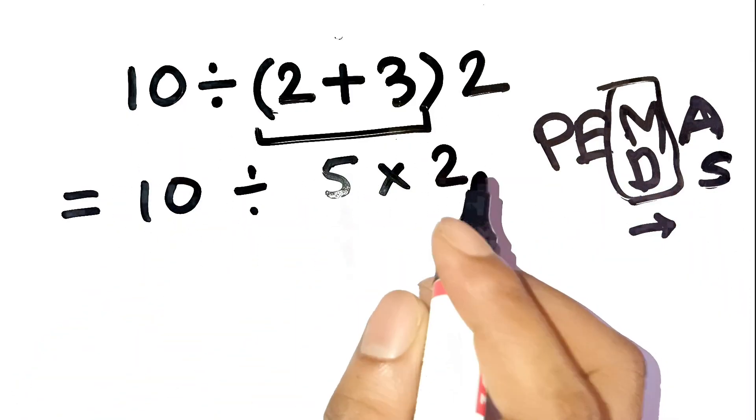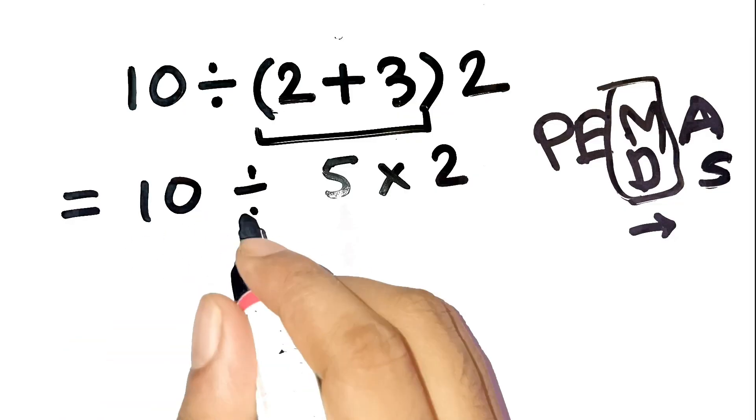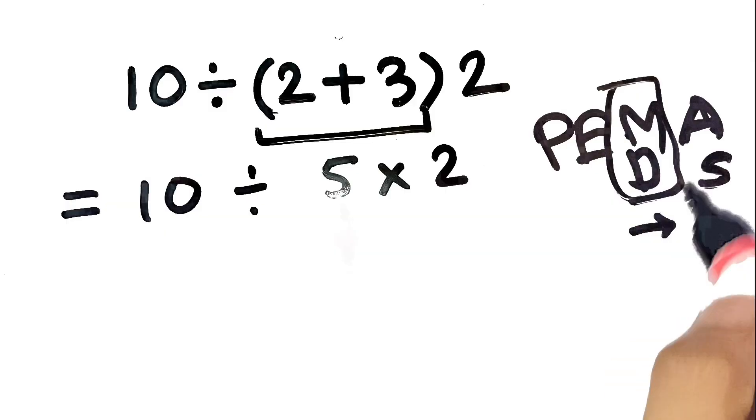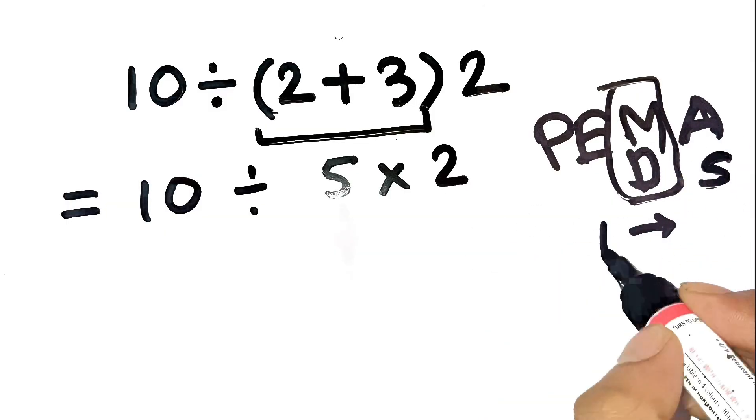And here's the part people mess up. Do not just combine 5 times 2 first. Division and multiplication are equal, so we process left to right.